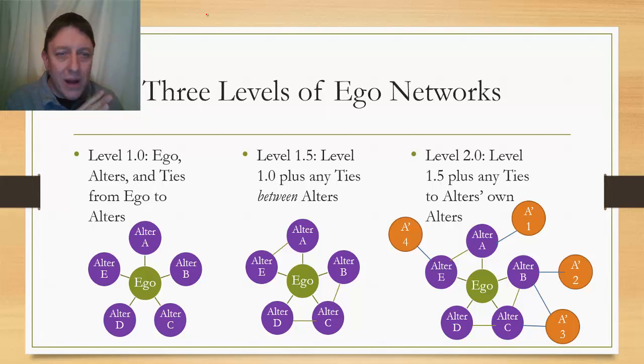Notice in level 1.0, two things. First of all, every alter that's there has got to be tied to ego, because otherwise they wouldn't be an alter. So there will always be ties from ego in a level 1.0 network and to nobody else. And also notice, what is the network distance from ego to all the alters? It's one, right? It's one. That's why it's called a level 1.0 ego network.